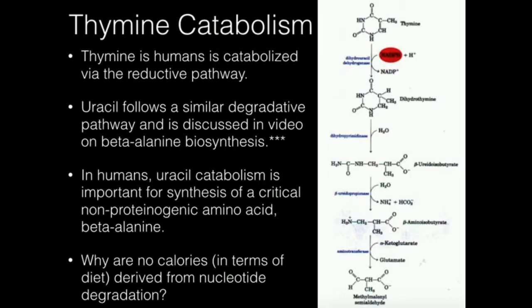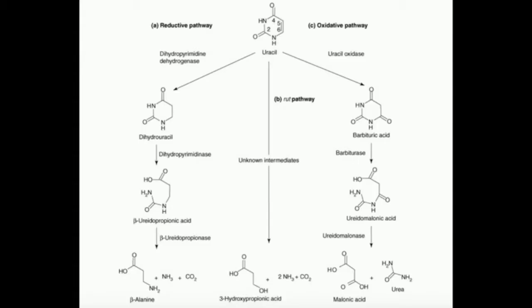The pathway for thymine is going to be identical to uracil, except thymine has to have an extra enzyme literally just because it has that methyl group. It turns out that because uracil does not have the methyl group, we're actually going to be producing a molecule that's very important for us. We'll see that at the very end.